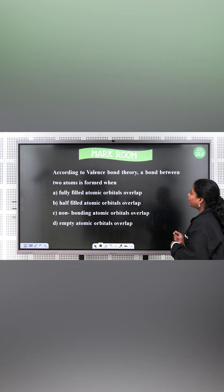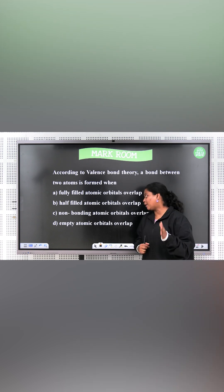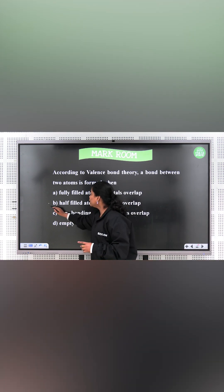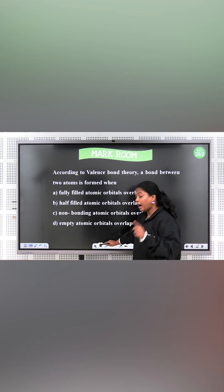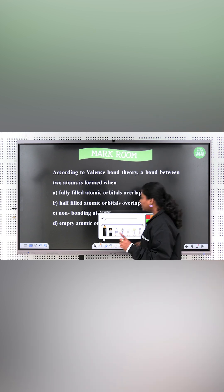First question: according to the valence bond theory, a bond between two atoms is formed when? Half-filled atomic orbitals overlap. So in VBT concept, half-filled atomic orbitals are bonding.